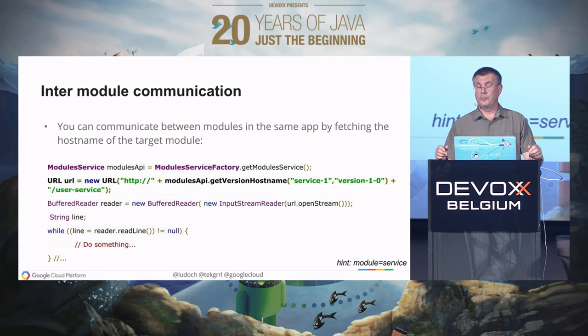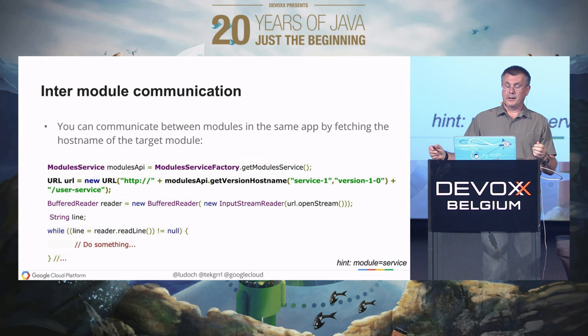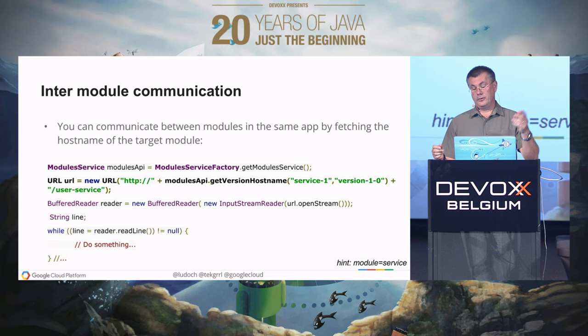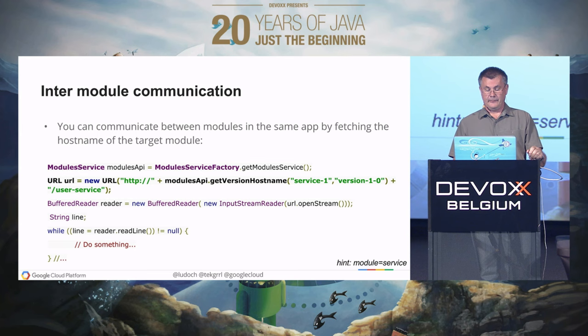All those modules and services within the same project share the same datastore, memcache, and task queue. Looking at this graphically: Project 1 has two services, each with two versions (1.0 and 2.0), so one single App Engine application is composed of four running services. Those four services share the same platform-as-a-service environment — a datastore (a non-SQL database from Google), a memcache layer that's just there and ready to use, and a message queue and task queue system.